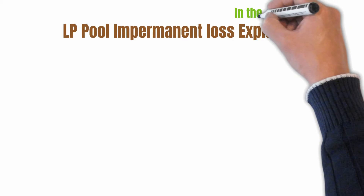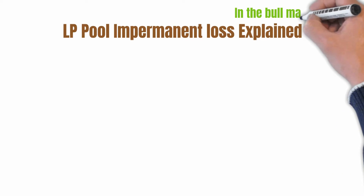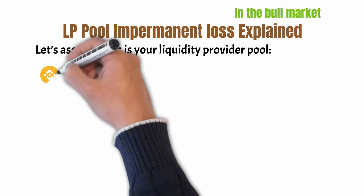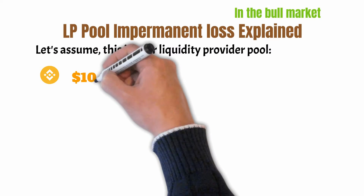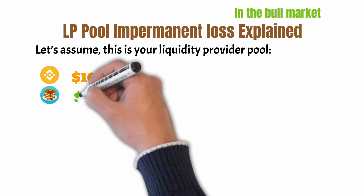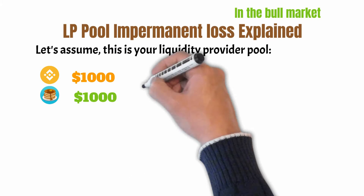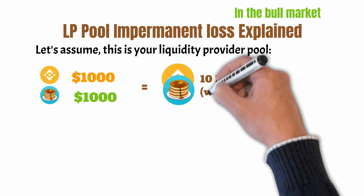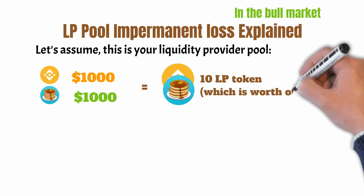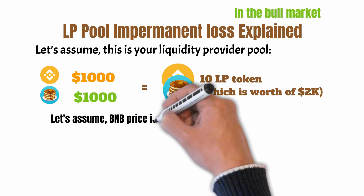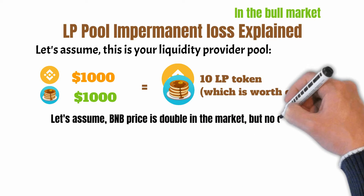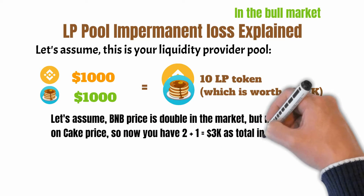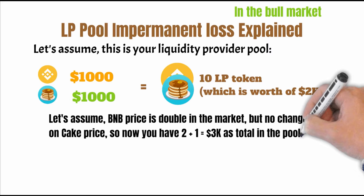LP pool impermanent loss explained while being in the bull market. Let's assume this is your liquidity provider pool. You have BNB coin worth $1,000 and Cake coin worth $1,000, which gives us a pair — let's say 10 Cake-BNB LP tokens worth $2,000. Since we are in the bull market, let's assume BNB price doubles in the market but there are no changes in the Cake price. So now you have $3,000 as a total in the pool.